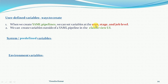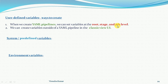When you are creating YAML pipelines, you can set a variable at the root, stage, and job level. We can also create variables outside of the YAML pipeline in the classic view UI. The classic view editor variables can be used throughout the pipelines and throughout the project.